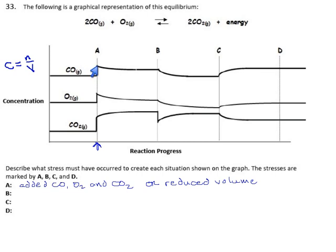So they do that to the system and then you see the system reacts. We lose some carbon monoxide and we lose some oxygen and we produce carbon dioxide and then the system finds equilibrium again.